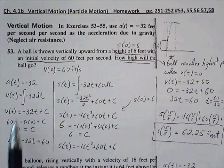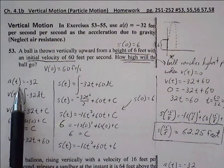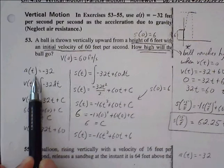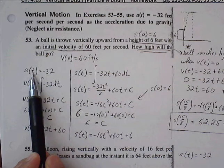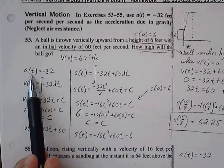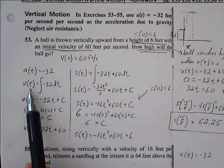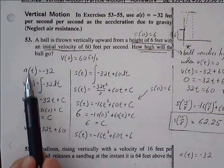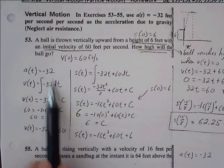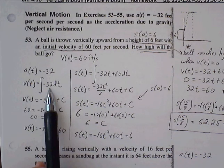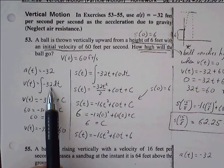So we're starting with acceleration. We want to move our way up to velocity and then to position from there. So acceleration is, or velocity is the integral of acceleration. If we find the anti-derivative of acceleration, we can move our way up to our velocity function. So the integral of negative 32.